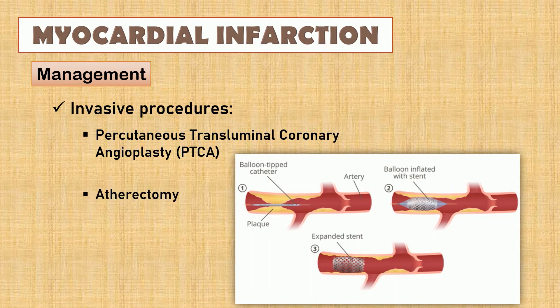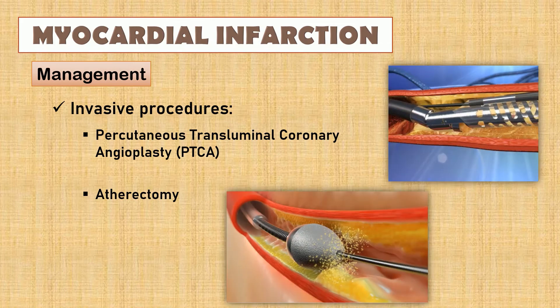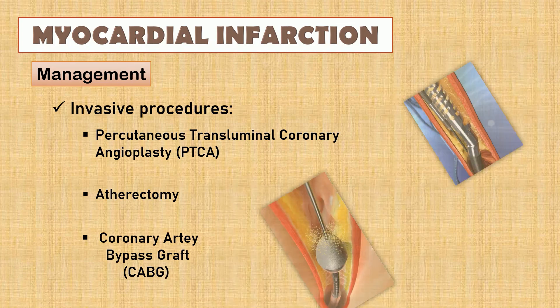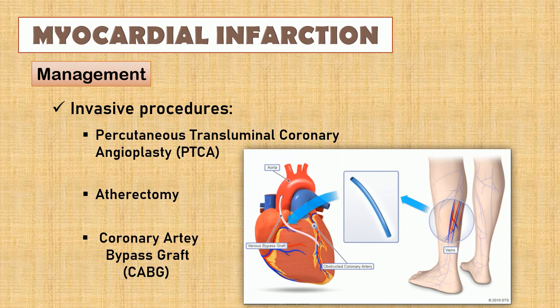Next procedure is atherectomy — the removal of plaques that block the coronary artery. In this procedure, there may be a tiny blade or a rotating tip on the end of the catheter to remove the plaque. Lastly, coronary artery bypass graft — to improve poor blood flow to the heart, this procedure takes blood vessels from another part of the body, like arteries from the arm or chest, or veins from the legs, then connects them to bypass the blocked or narrowed artery.